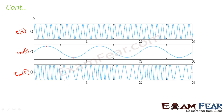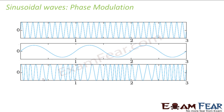Now, how do we describe a sinusoidal wave mathematically? If I ask you to describe the carrier wave, we write it as C(t) = Ac·sin(ωt), where Ac is the amplitude of the carrier wave. Similarly, the message signal is denoted as Am·sin(ωt). We will also look at the mathematical aspect of amplitude modulation in one of our next slides. For now, understand it graphically — how different types of modulation happen.